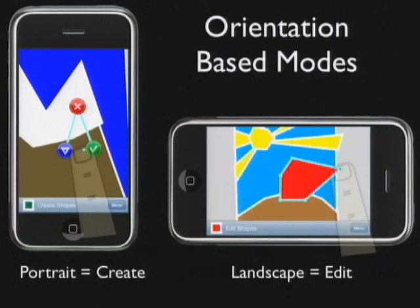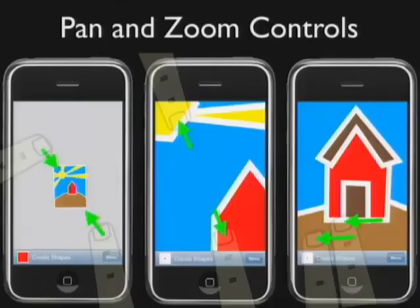That way, you don't have to select tools and go back and forth like you do in normal interfaces. I also have pan and zoom controls. I reserve all two-finger gestures for moving the camera around, whereas one-finger gestures were reserved for creating and dealing with objects.